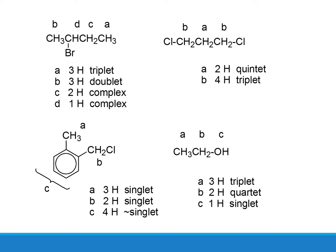For the first brominated molecule, there is a combination of signals: three protons as a triplet, three protons as a doublet, two protons generating a complex signal, and one proton generating another complex signal. For the second molecule, two protons generate a quintet and four protons generate a triplet. The chlorinated molecule generates three protons as a singlet, two protons as a singlet, and four protons as a singlet. For ethanol: A (methyl) shows three protons as a triplet looking at two neighbors; B (methylene) shows two protons as a quartet looking at three neighbors from the methyl group — the OH does not count; C (OH) generates a singlet.